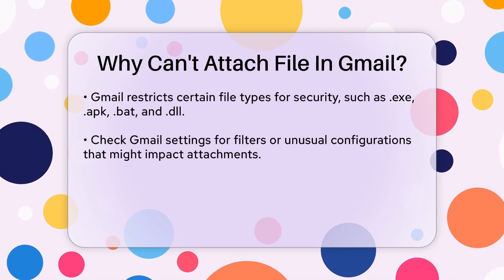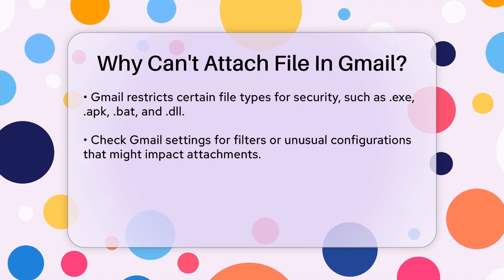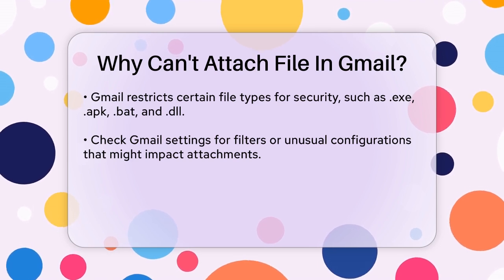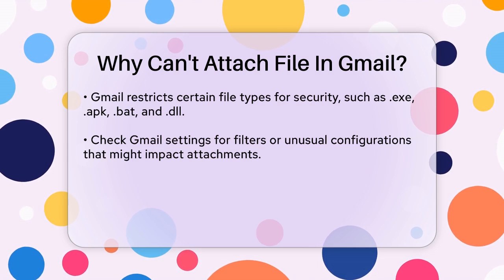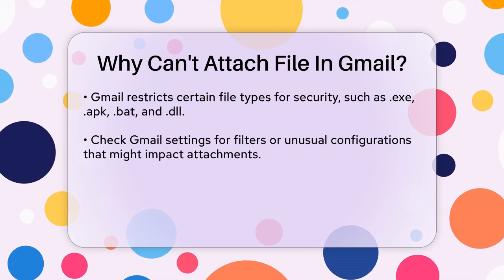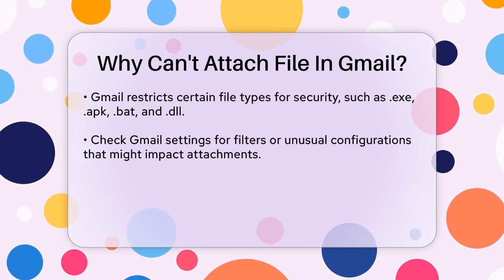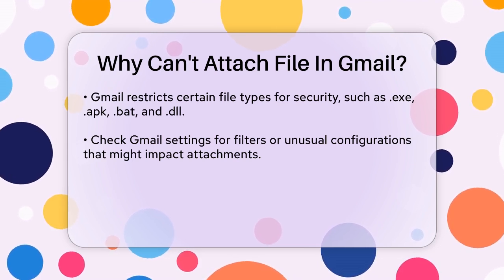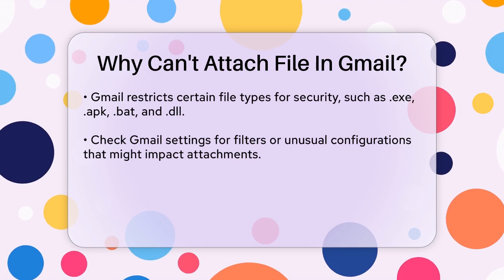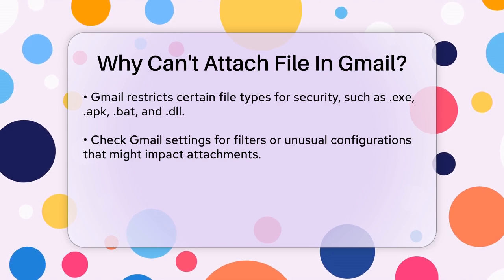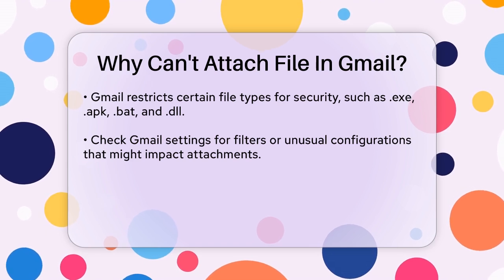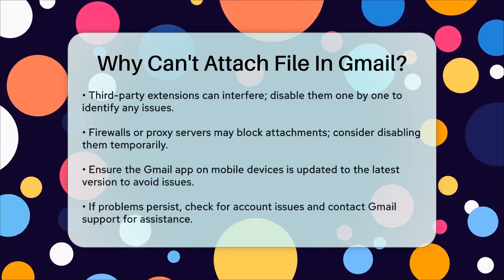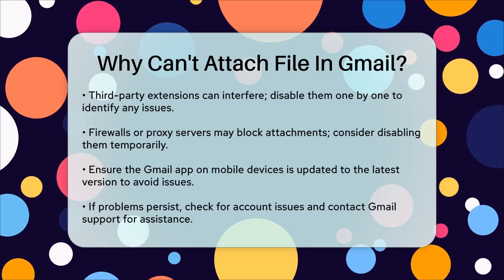Firewalls or proxy servers can also block the attachment function in Gmail. Disabling your proxy server or firewall temporarily can help resolve this issue. For example, you can go to Internet Options in your browser settings, visit the Connections tab, and deselect the option to use a proxy server for your LAN.